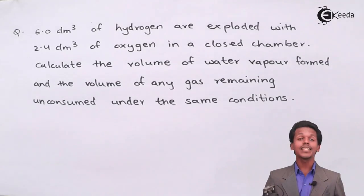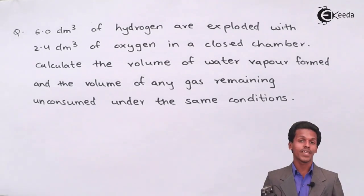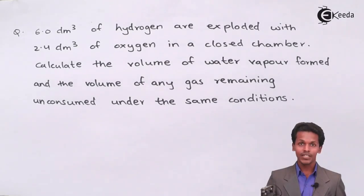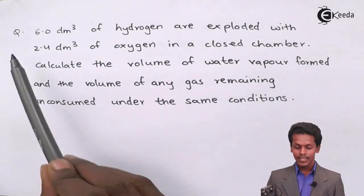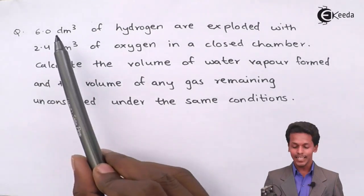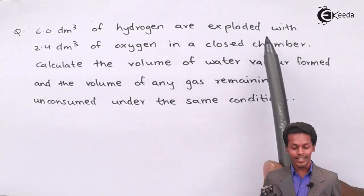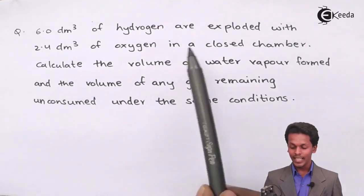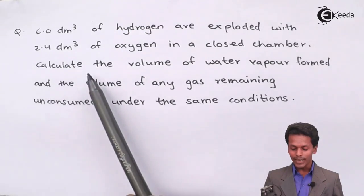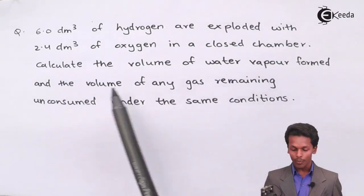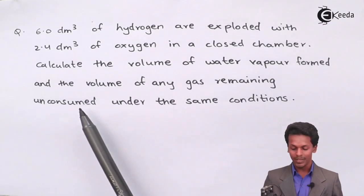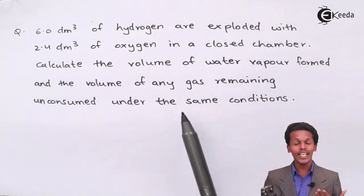This numerical is based on the law of chemical combination. The question states that 6 dm³ of hydrogen is exploded with 2.4 dm³ of oxygen in a closed chamber. We have to calculate the volume of water vapor formed and the volume of any gas remaining unconsumed in that reaction under the same conditions.